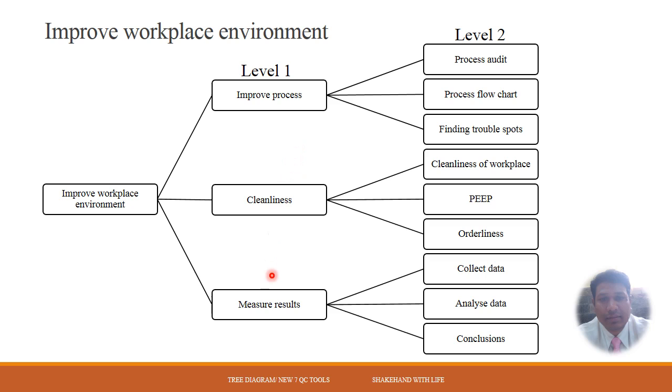The third option at Level 1 is Measure Results. How can we measure the results? To answer this question, we have three answers, three options coming out here. The result can be measured by collecting the data and analyzing the data, then concluding, making a conclusion for this analysis. This way, I have got nine options at Level 2.